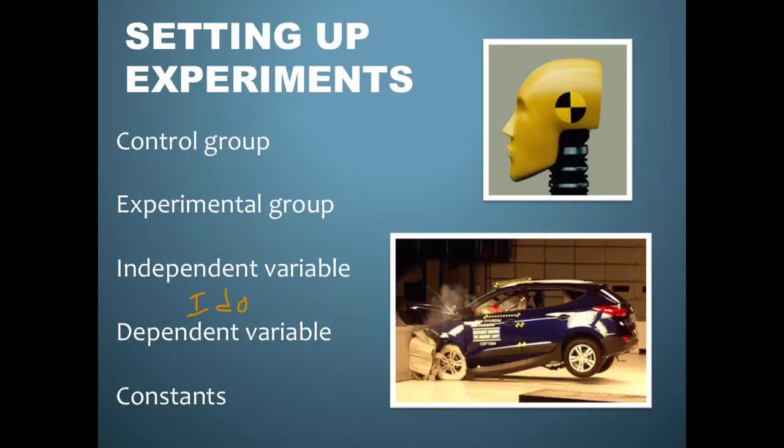And then the dependent variable, in this case, is the impact that this dummy is going to receive. The one thing to note is that the dependent variable depends on the independent variable. The dependent variable depends on the independent variable. See, the impact that the dummy receives isn't going to change unless we manipulate the airbag. The airbag, whether there is an airbag or not, is what's affecting the impact that this dummy receives. That's what we're testing.